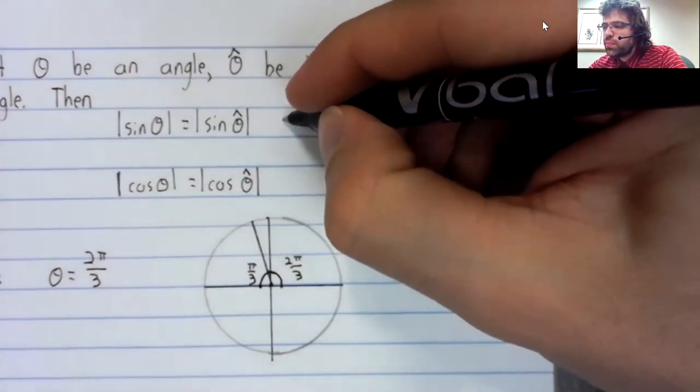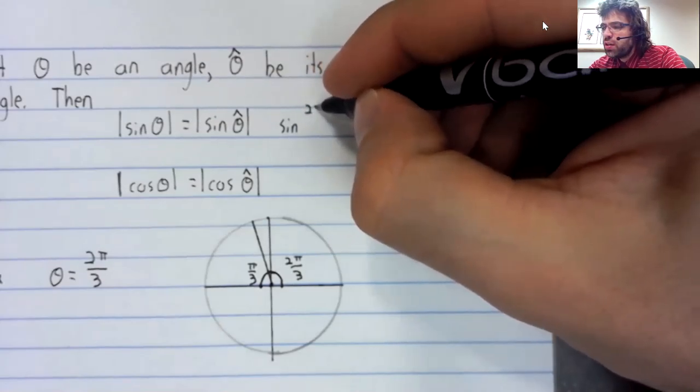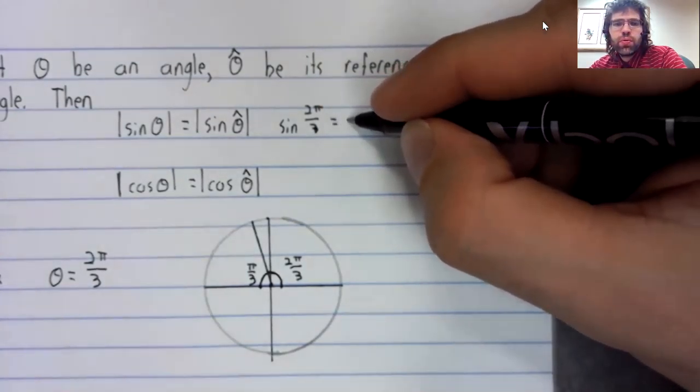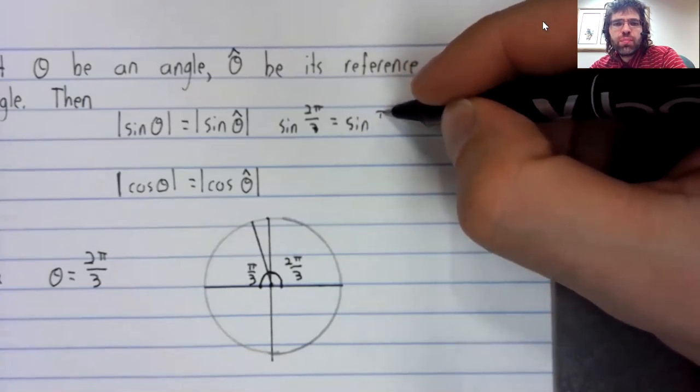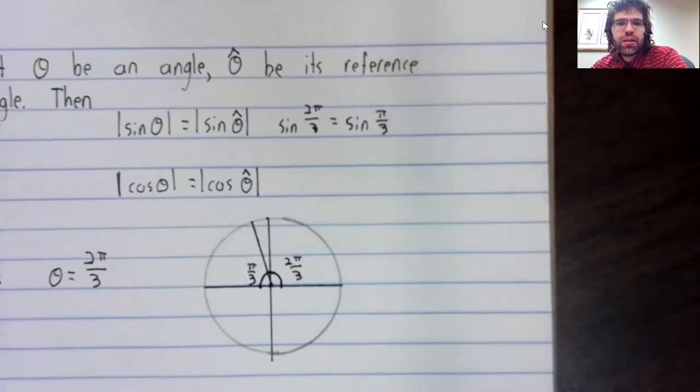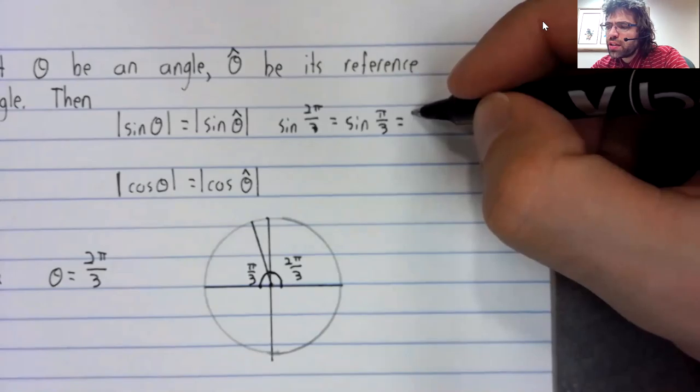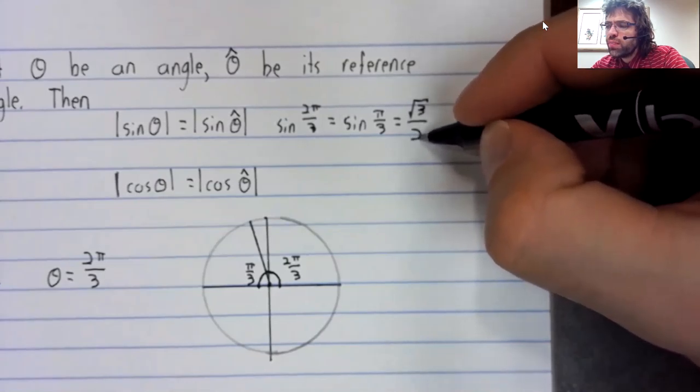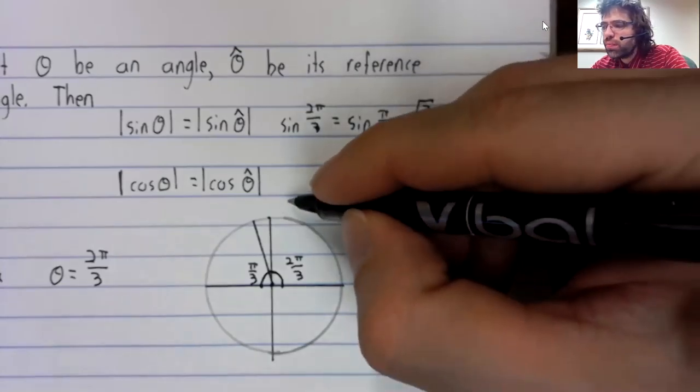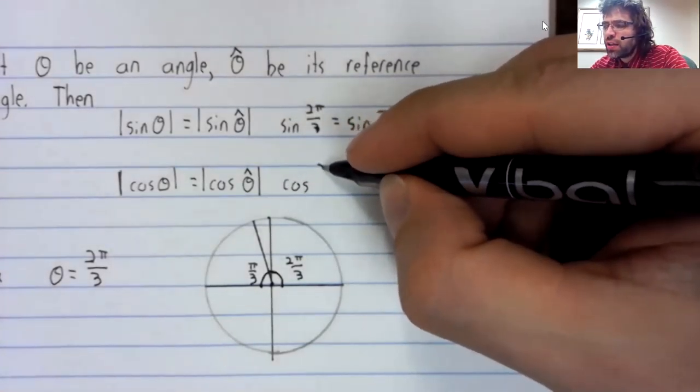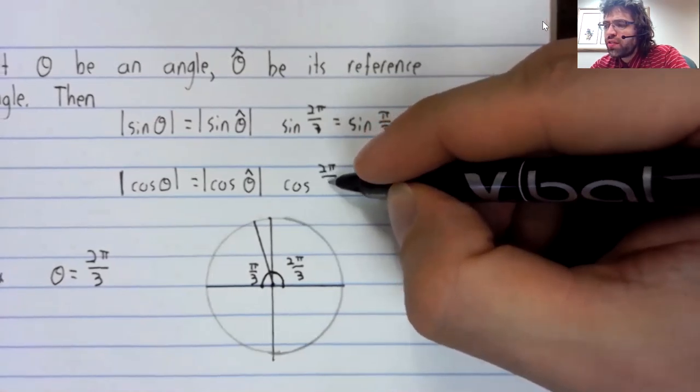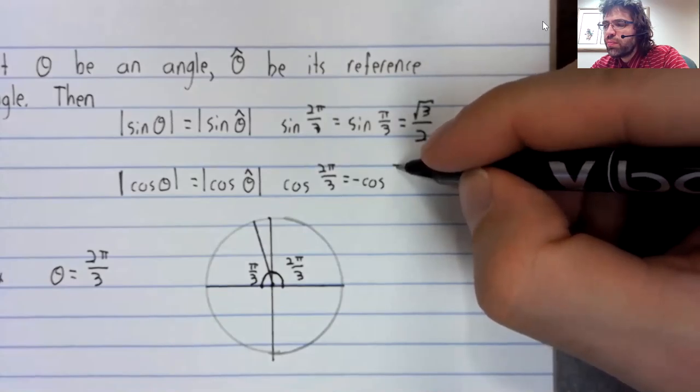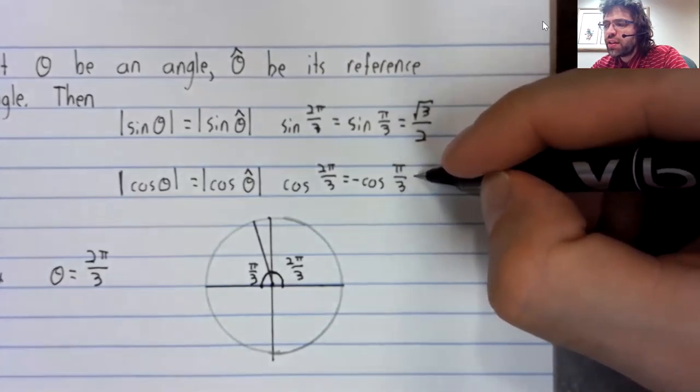So we found that the sine of two pi over three equals the sine of pi divided by three. And we know what that is. It's the square root of three, and the cosine of two pi divided by three is the negative cosine of pi divided by three, so it's negative one-half.